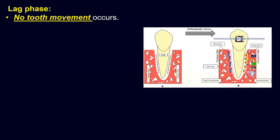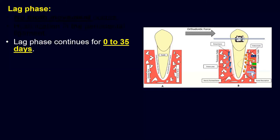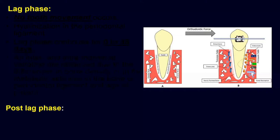When the osteoclasts are triggered, they resorb the bone in front of the root, and when the resistance is removed, the tooth and root start moving again in the post-lag phase. The lag phase varies from 0 to 35 days — there is a huge gap. Why is the lag phase so extended? We have different types of bone resorption: frontal resorption and undermining resorption.